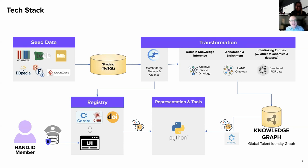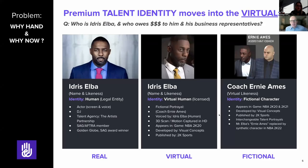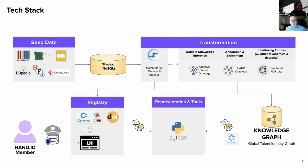Here's a sneak preview of our tech stack. We have a set of seed data sources — this is not a complete list. We bring data into a NoSQL environment where we match, merge, deduplicate, cleanse, and normalize. We have a registration process based on citation-back notability that allows us to create a new HAND identifier in cooperation with the DOI Handle System. We also have a transformation layer that we'll unpack further — covering the ontology and the knowledge graph we're building.